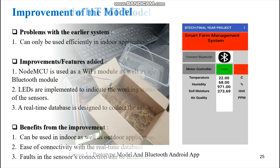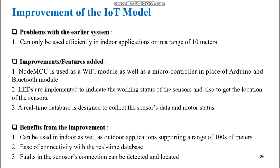The improvement of the IoT model was done in Phase 2 due to problems with the Phase 1 system. The main problem was that the system could only be used indoors or within a range of 10 meters due to Bluetooth's limited connectivity. In Phase 2, we replaced Arduino and the Bluetooth module with NodeMCU. LEDs were implemented to indicate working conditions of sensors, and a real-time database was designed to store collected data.